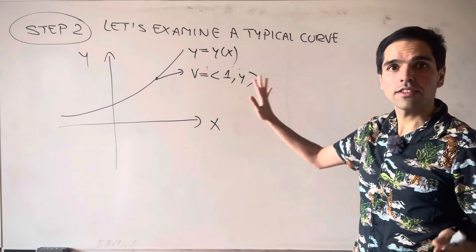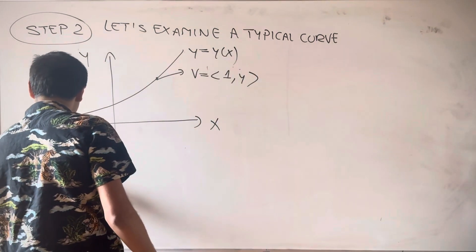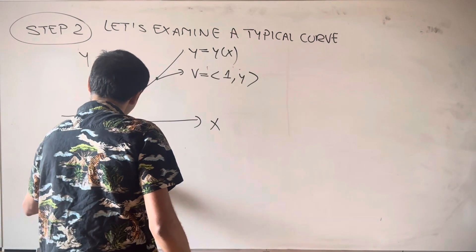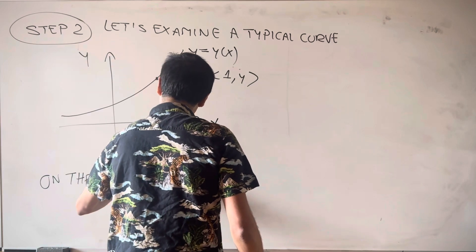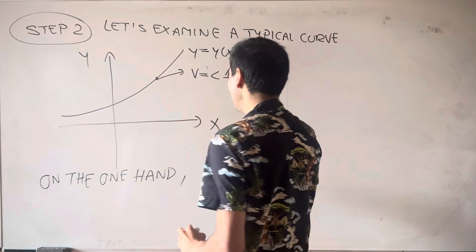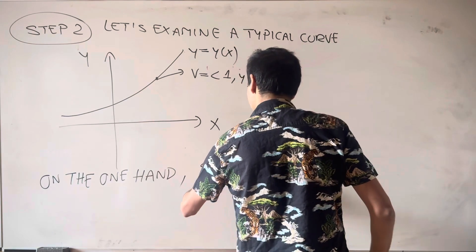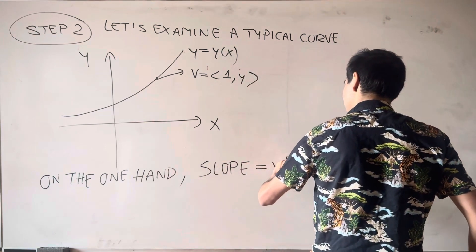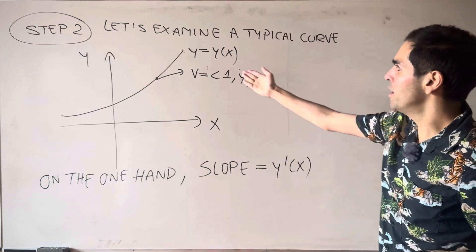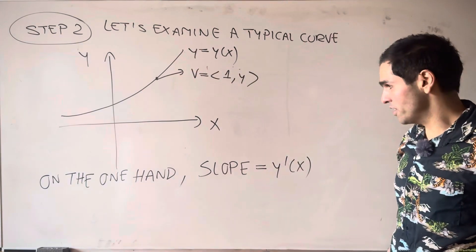Then, the thing to note is, on the one hand, what is the slope of the curve? On the one hand, the slope, using calculus, is y prime of x. So y prime is kind of the slope of the tangent curve.